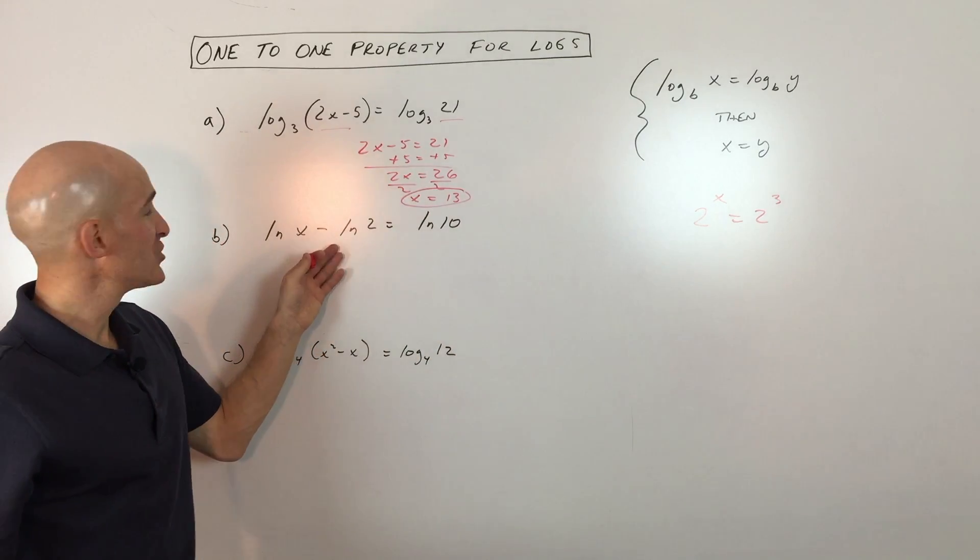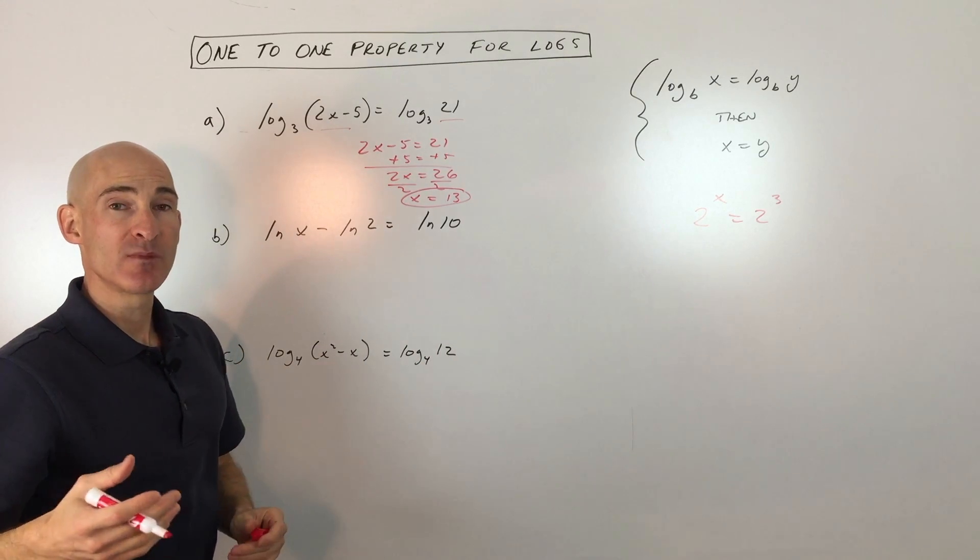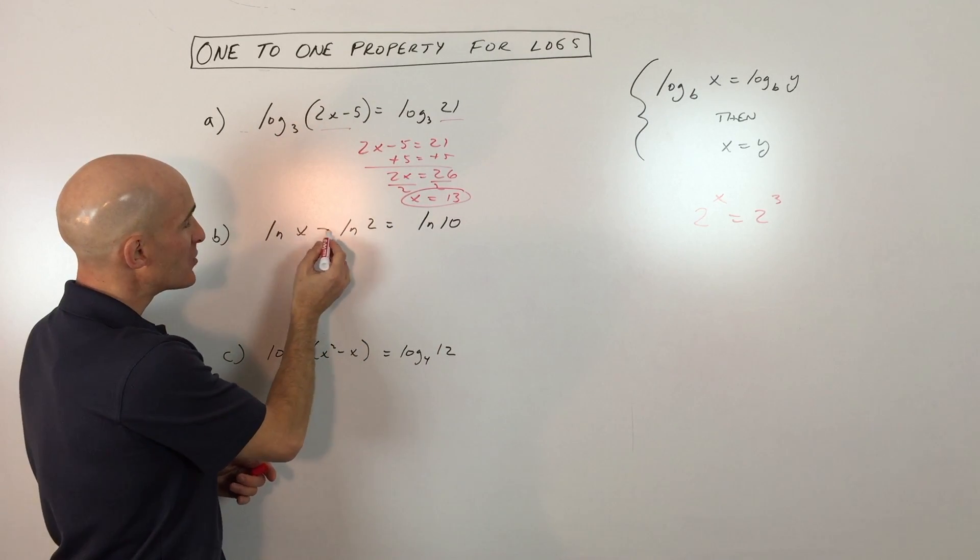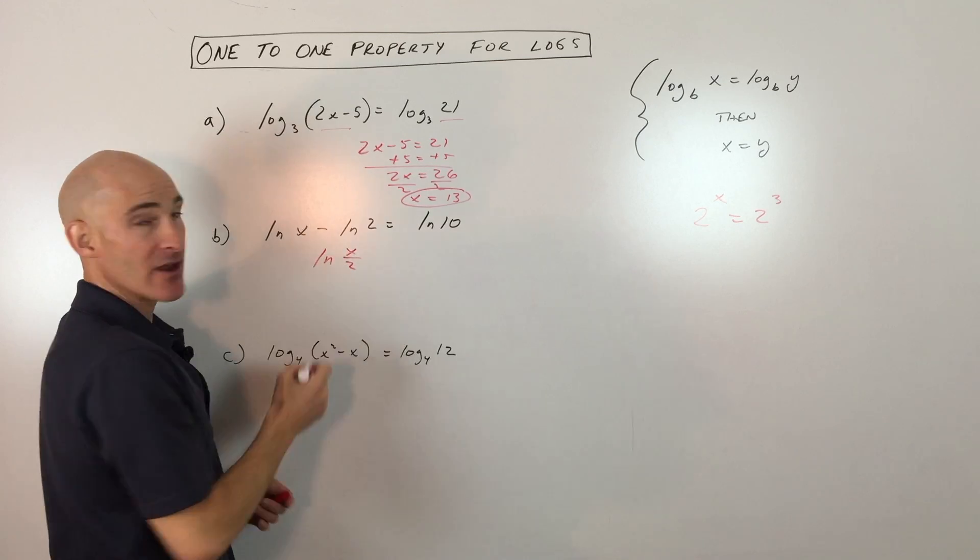Let's look at a little more challenging example. Now these are natural logs, and what we're going to do is use the properties of logs to combine these together into one log. The way you do that is when you're subtracting, you can write this as one log by dividing the arguments.